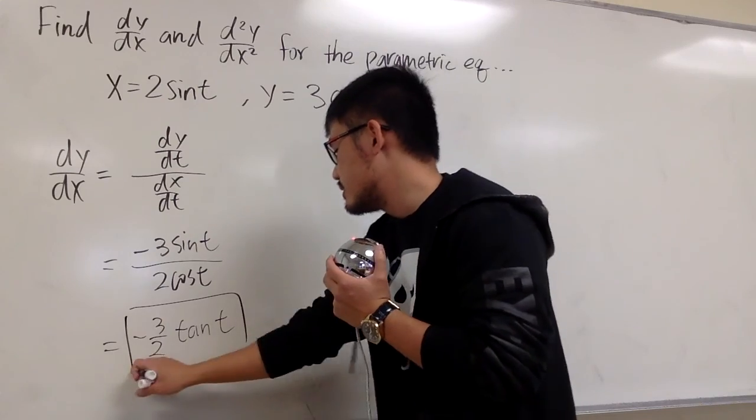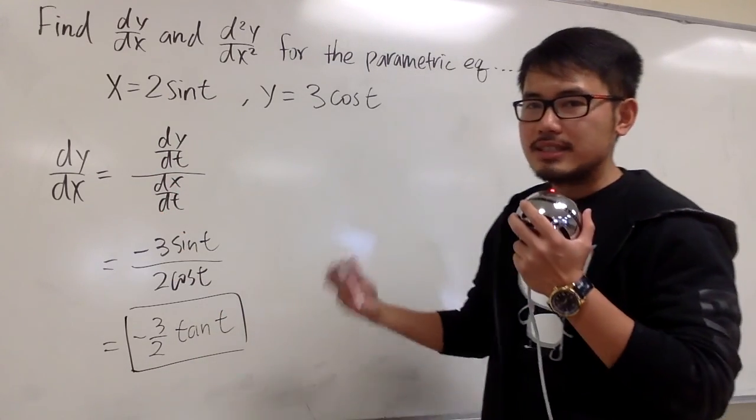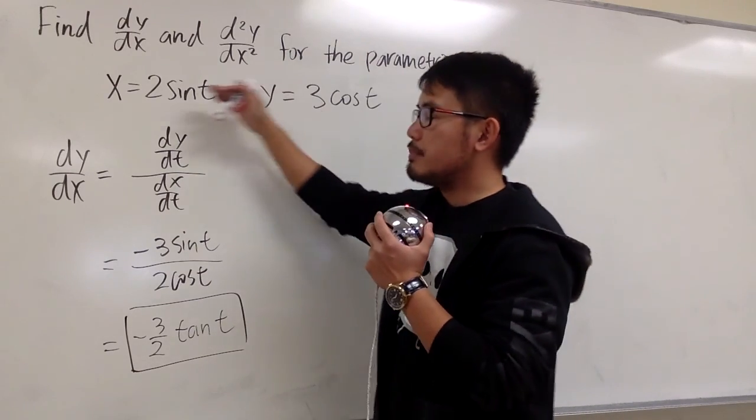And this is the first derivative, dy/dx, in the sense of the slope of the line tangent to this parametric curve.